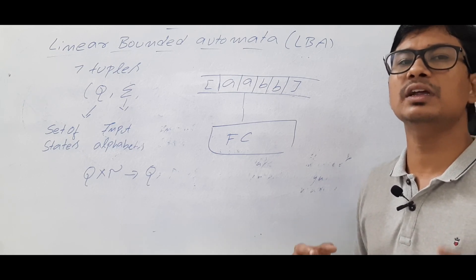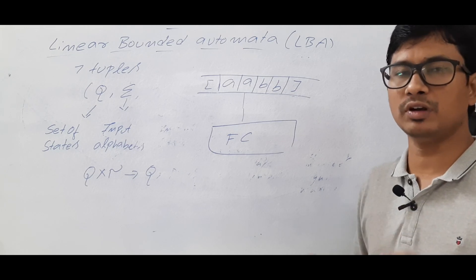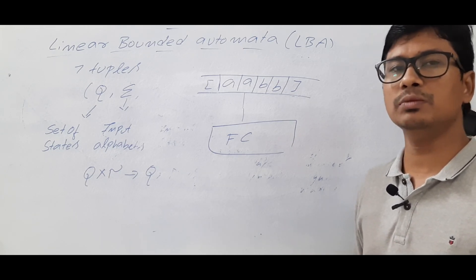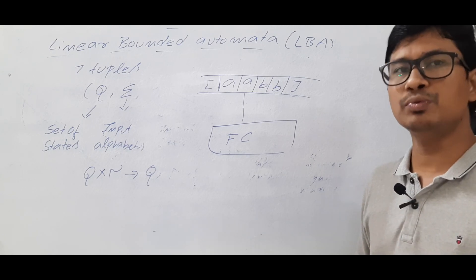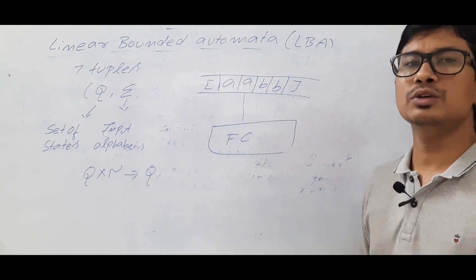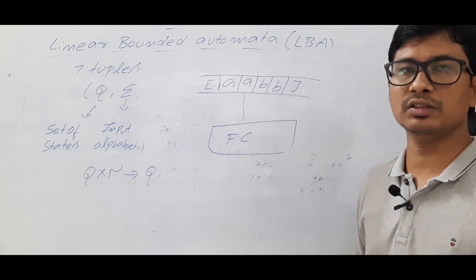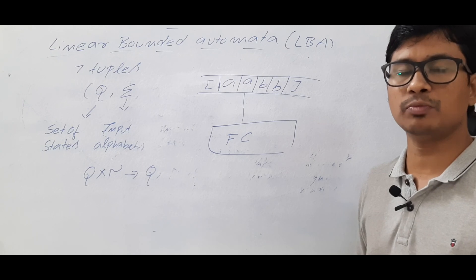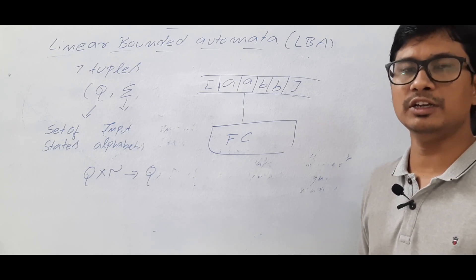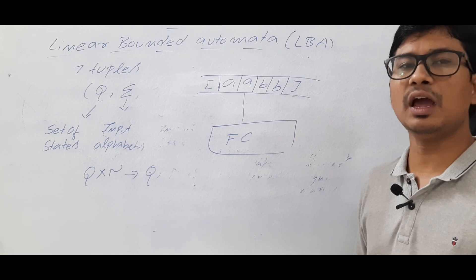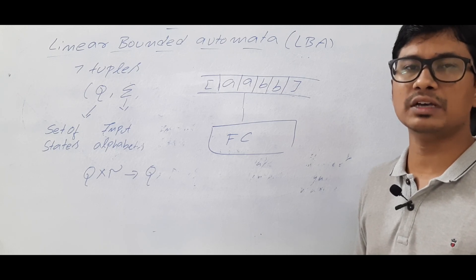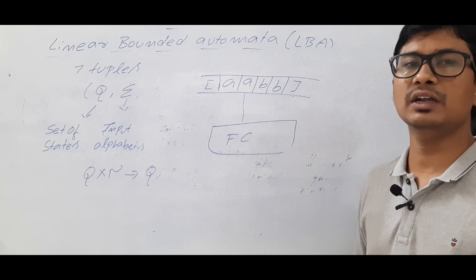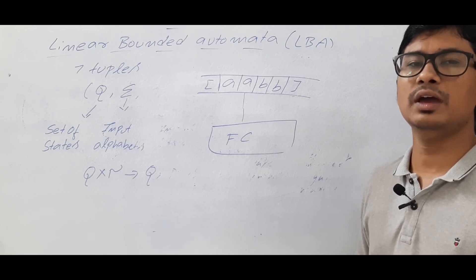That is why linear bounded automata is less powerful than the Turing machine, but more powerful than the pushdown automata. I hope you have understood the introduction and the formal definition of a linear bounded automata. If you still have any doubts, feel free to ask in the comment section — I will clear your doubts in less than 24 hours. Thank you so much for watching. Have a nice day.